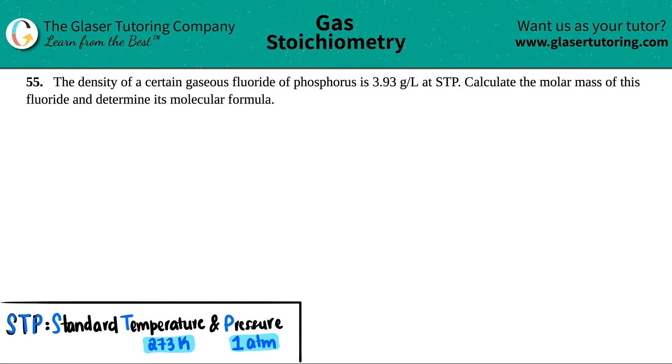Number 55: The density of a certain gaseous fluoride of phosphorus is 3.93 grams per liter at STP. Calculate the molar mass of this fluoride and determine its molecular formula.